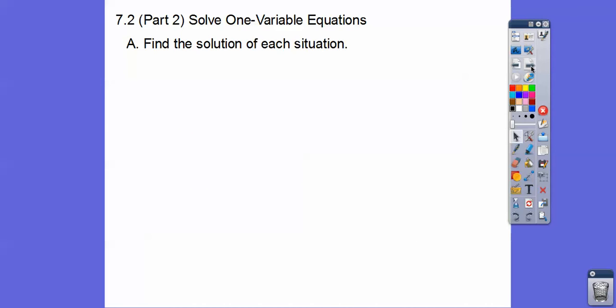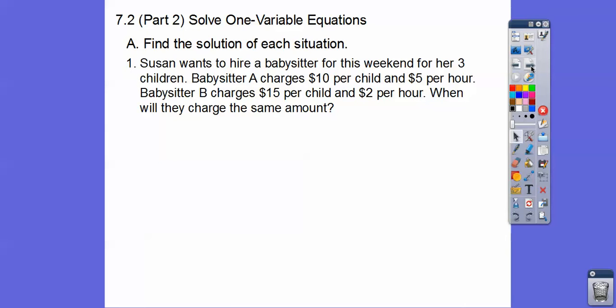Okay, so we had this same problem in the last lesson. Susan wants to hire a babysitter for this weekend for her three children. Babysitter A charges $10 per child and $5 an hour. Babysitter B charges $15 a kid and $2 an hour. When will they charge the same amount? In the last lesson, we got these two equations. Here's $30 because it's $10 for three kids. 10 times 3 is $30. Then $5 an hour, so there's my 5x.